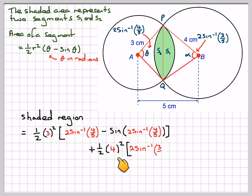Plus half of 4 squared times 2 sine inverse of 3 over 5 minus sine of 2 sine inverse of 3 over 5. These two terms represent alpha and these two represent theta.